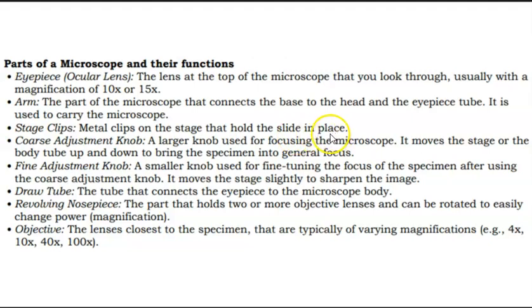The coarse adjustment knob is a larger knob used for focusing the microscope. It moves the stage or the body tube up and down to bring the specimen into general focus. The fine adjustment knob is a smaller knob used for fine tuning the focus of the specimen after using the coarse adjustment knob. It moves the stage slightly to sharpen the image.